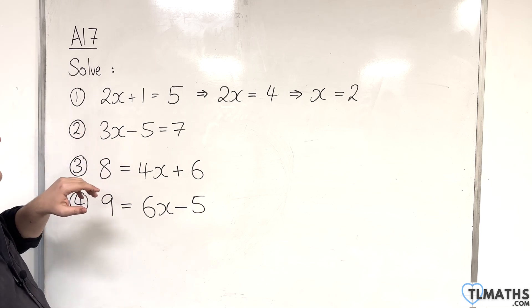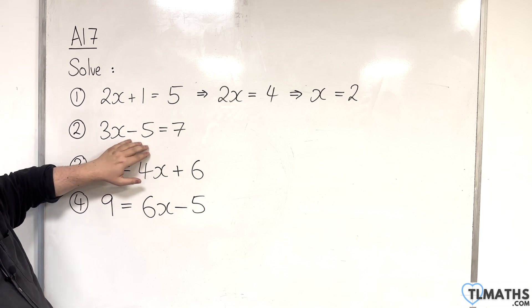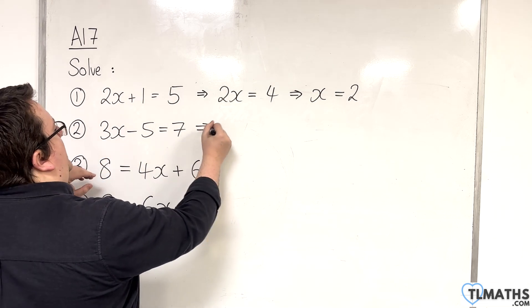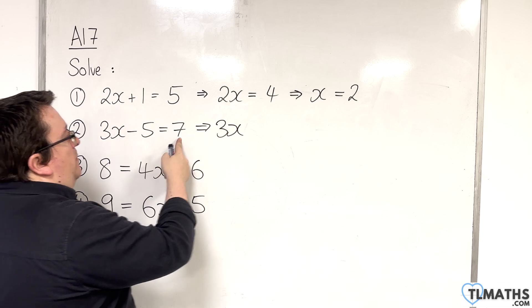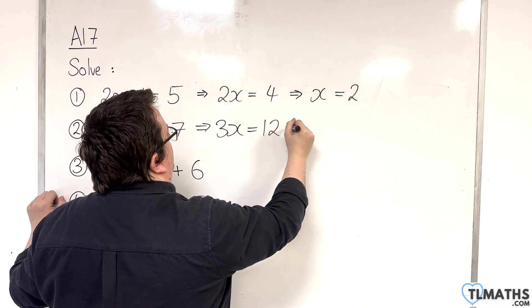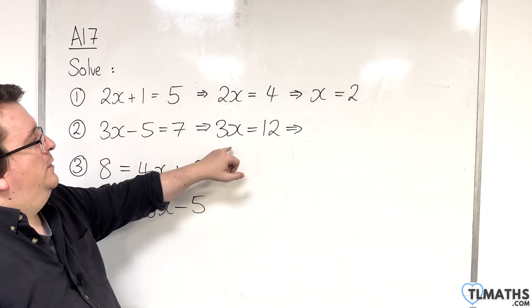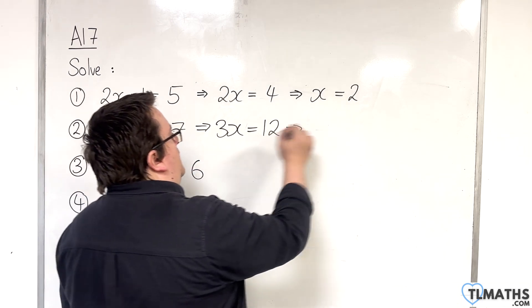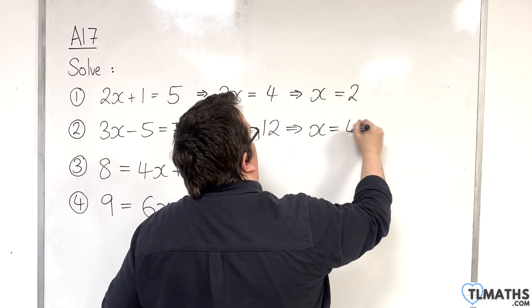So, number 2, we have 3x take away 5 is 7. So, we have this subtract 5 there. OK. Deal with that first. So, we need to add 5 to both sides. So, the left-hand side becomes just 3x. The right-hand side, 7 plus 5 is 12. Now we have 3x equals 12, so we're multiplying by 3, so we need to divide by 3. 3x divided by 3 is x. 12 divided by 3 is 4.